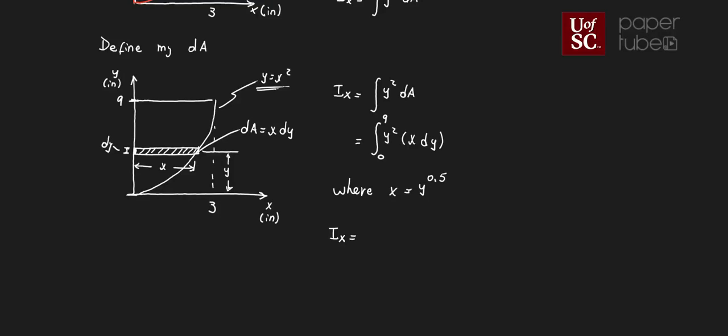So if we go back to my integral, my Ix is going to be the integral from 0 to 9 of y squared. This x becomes y to the 0.5 dy. If I'm multiplying those two values in the parenthesis, that's equivalent to adding the superscripts. So this is y to the 2.5 dy.